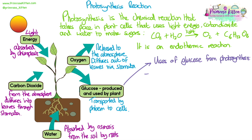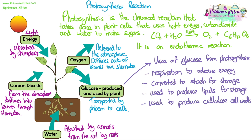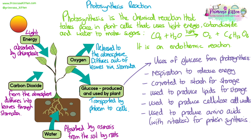We need to know how plants use the glucose they produce from photosynthesis. A lot of it is used up in respiration to release energy for processes in the cells. Some can be converted to starch or used to produce lipids for storage. Some is used to produce cellulose in the cell walls. Some is combined with nitrates from the soil to produce amino acids, which can then be used to make proteins through protein synthesis.